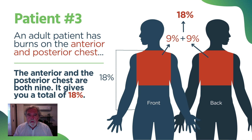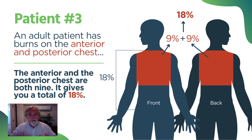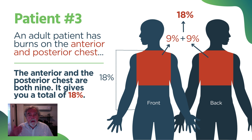So what have we learned so far? Arms are 9%. Legs are each 18%. The front of the torso — comprised of the chest and abdomen — is 18%, and the back is 18%. And those qualifying words are very important.